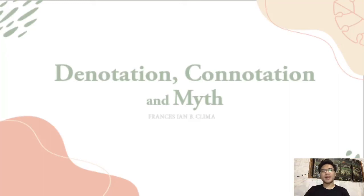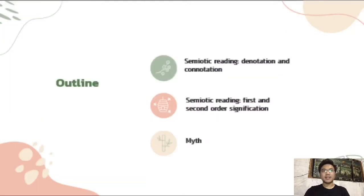Hi! In this video, I will be discussing denotation, connotation, and myth. I will be presenting the outline of this presentation. First is the semiotic reading between denotation and connotation. Second is another semiotic reading — first and second order. And lastly, myth.